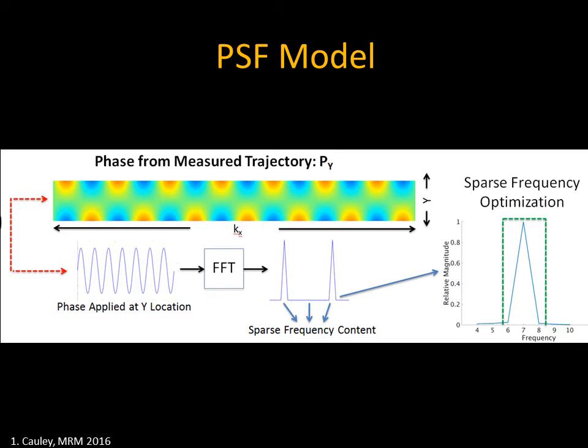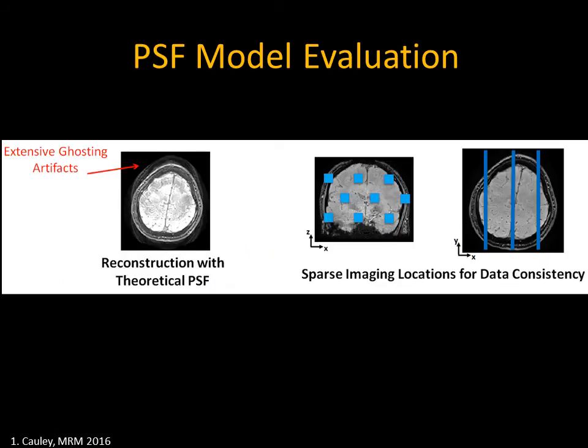Looking closer at the variables in the forward model, starting with the phase applied along the Y direction: horizontally we have KX and vertically we have Y, representing the sinusoidal phase varying across space. The scanner does a reasonable job and we can model this accurately using a limited bandwidth and a small number of frequency coefficients. To evaluate whether we're improving our estimate of the point spread function, we examine the ghosting level — trajectory mismatches produce ghosting artifacts everywhere, allowing us to set up a small number of test locations to monitor solution improvement.